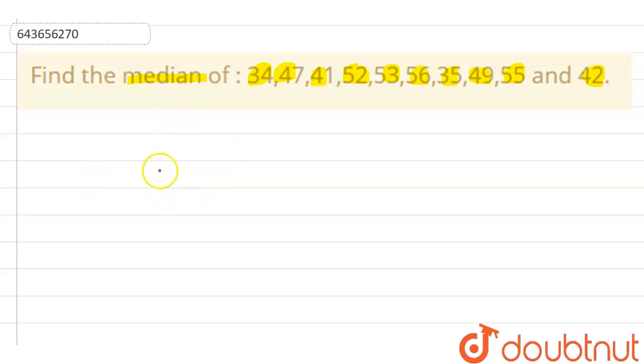So here now let's arrange it. Here it is: 34, 35, then 41, 42, 47, 49, 52, 53, 55, and at last 56. Right, so here we have arranged the given data in ascending order.